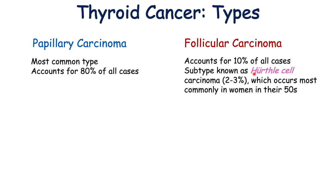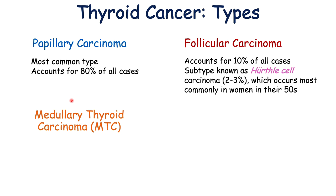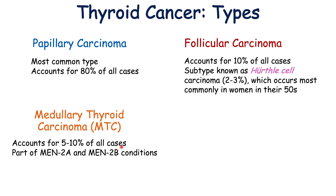The Hurthle cell carcinoma subtype occurs most commonly in women in their 50s. The third type of thyroid cancer is medullary thyroid carcinoma or MTC. This type accounts for approximately 5 to 10% of all cases, and it is part of the MEN2A and MEN2B conditions. MEN stands for multiple endocrine neoplasia.